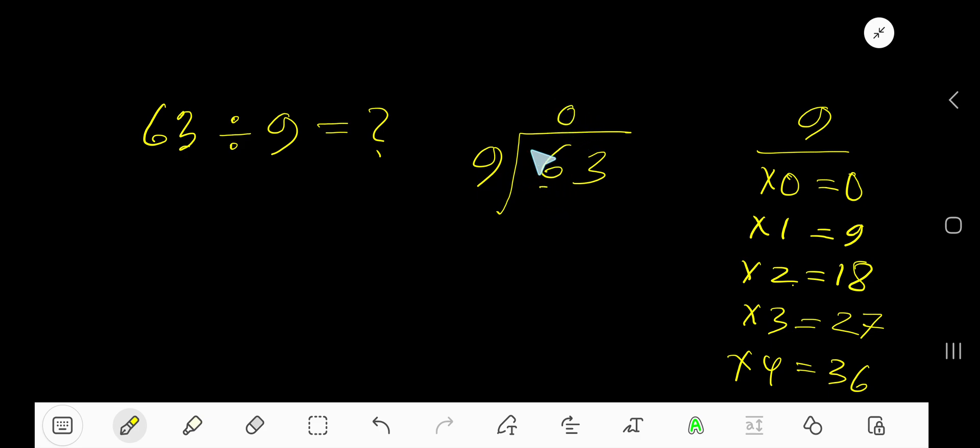0 times. 0 times 9 is 0. Subtract, bring down this 3. 9 goes into 63 how many times?